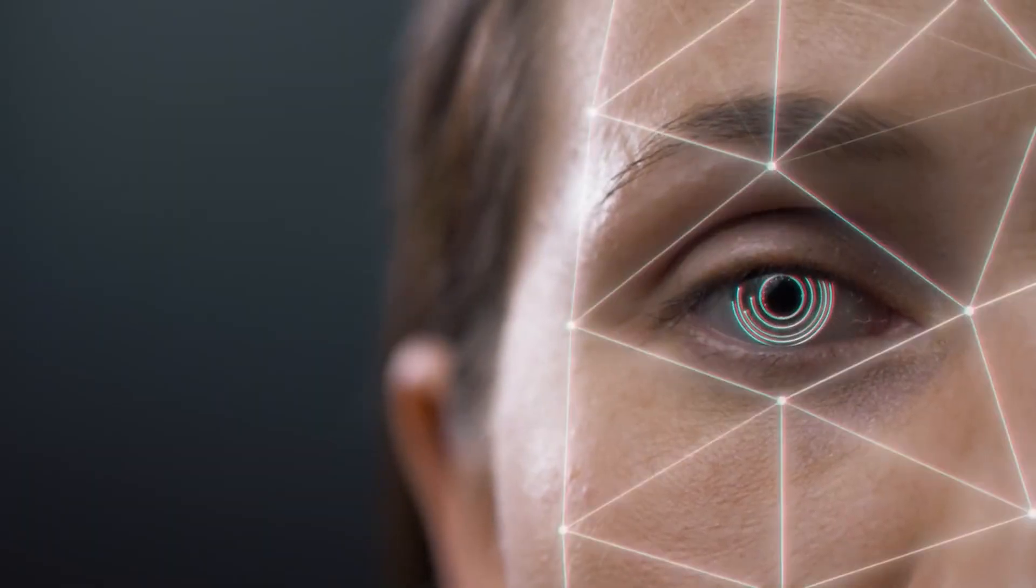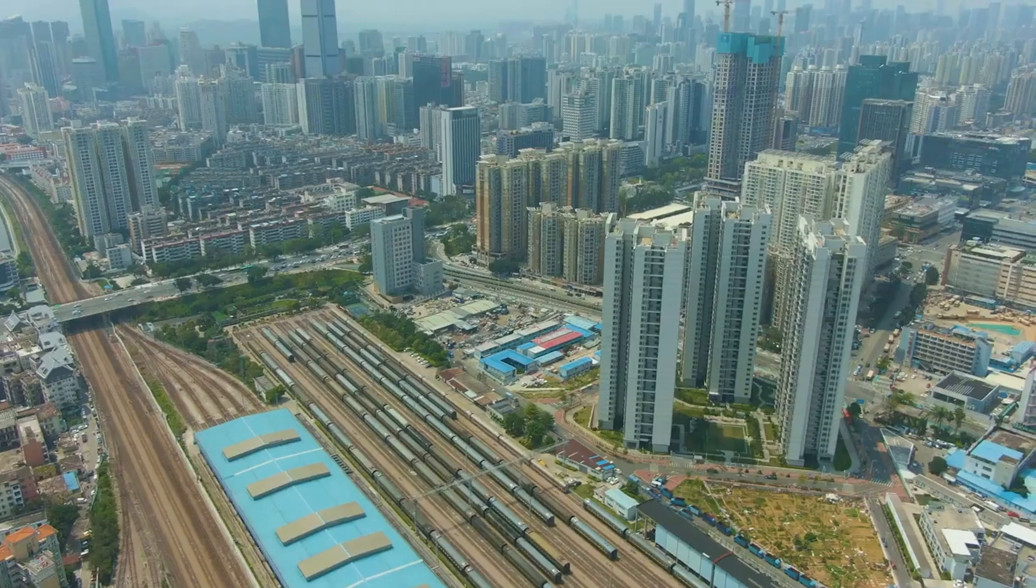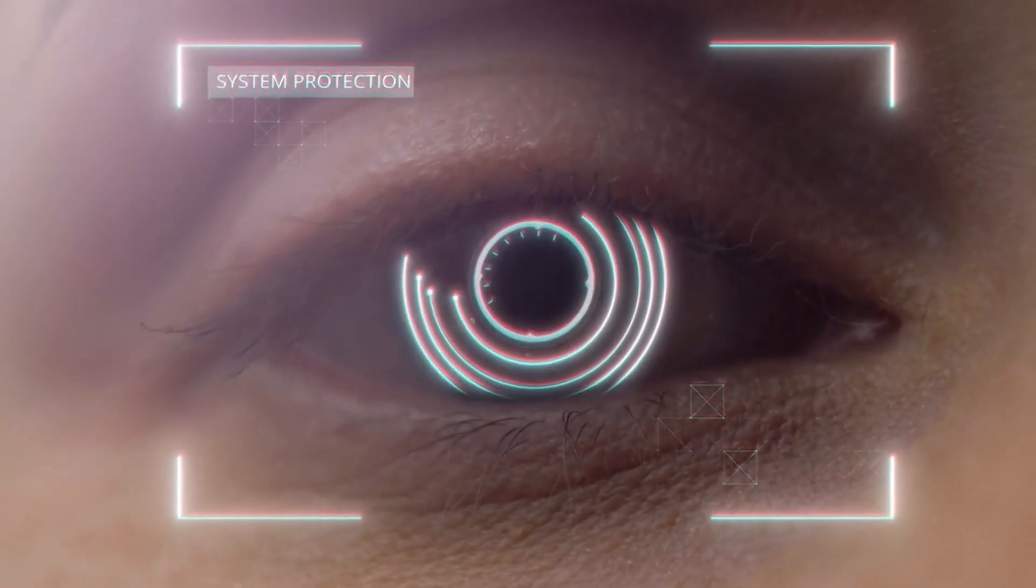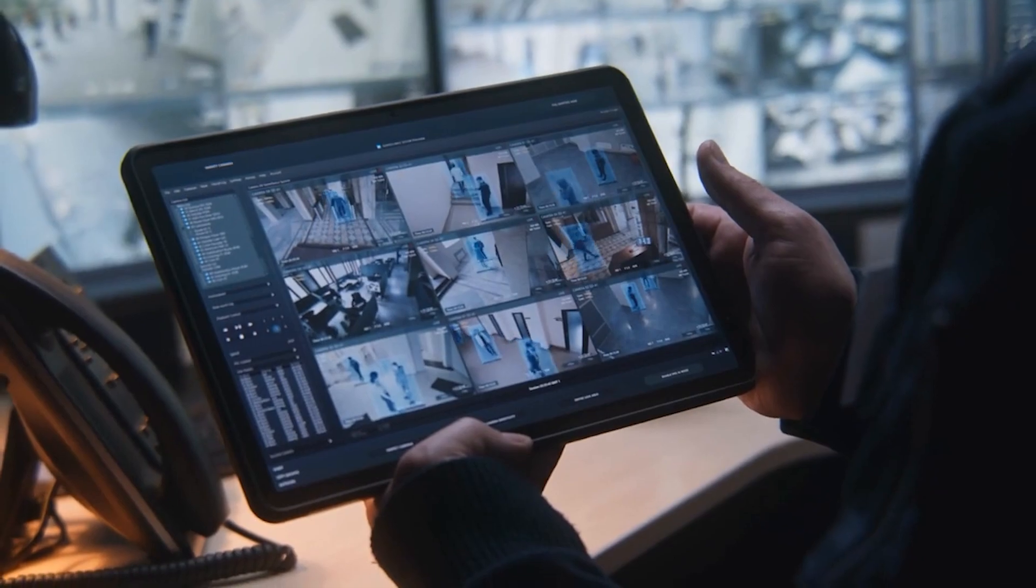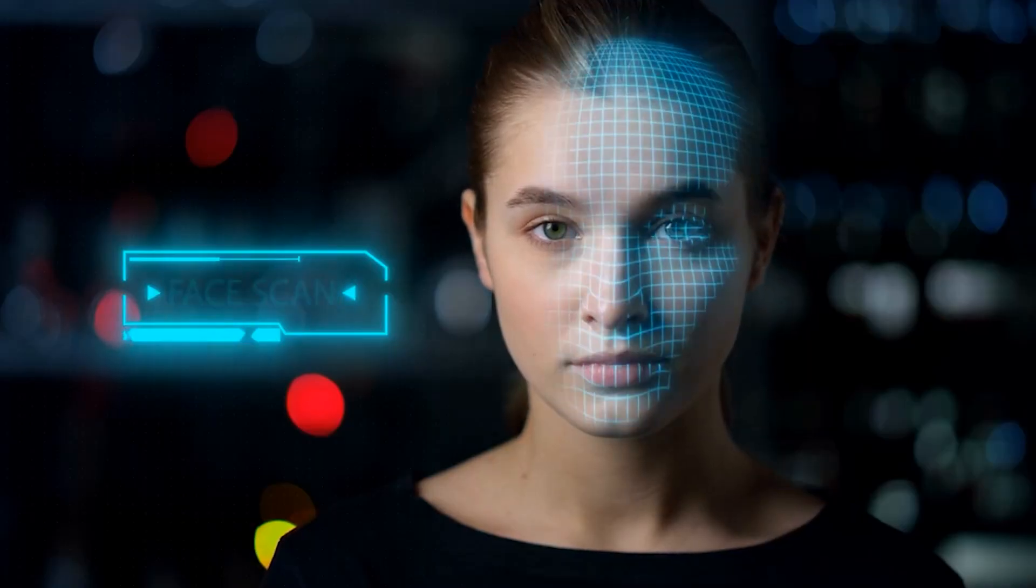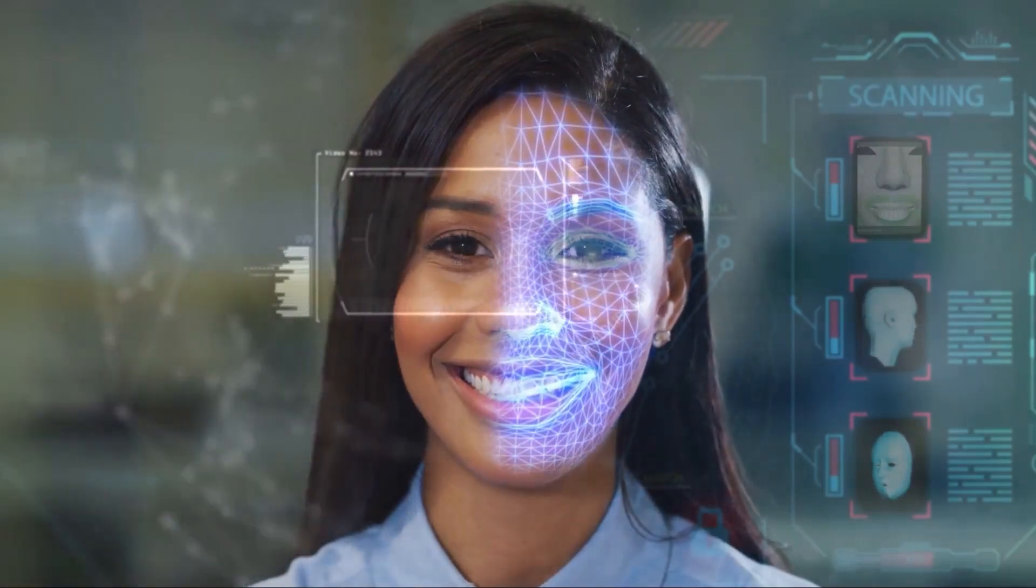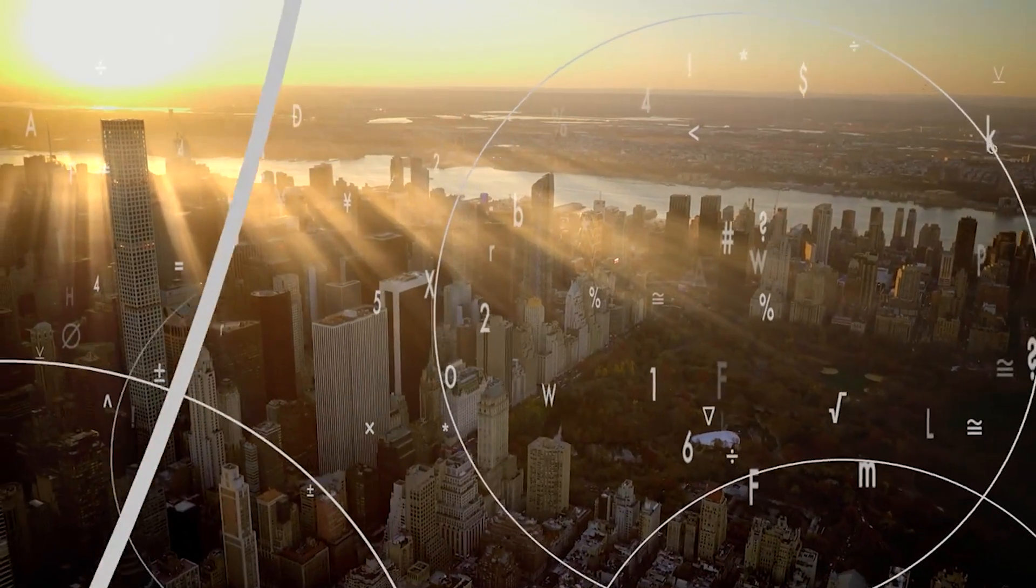Take for instance their work in facial recognition technology. In cities like Shenzhen, facial recognition systems are implemented everywhere from airport security to fast food. This technology not only helps to improve convenience but also enhances security, playing directly into China's broader AI strategy.